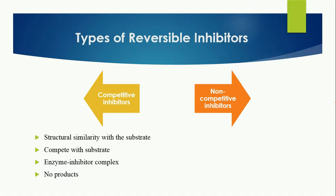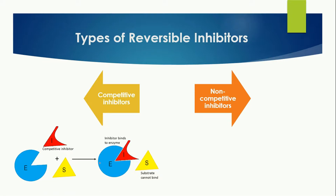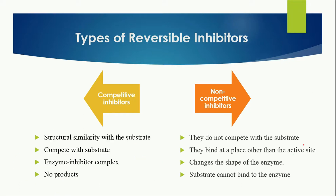The competitive inhibitors have structural similarity with the substrate, which means they compete with the substrate for the active site. After the competition, an enzyme-inhibitor complex forms, but since they are inhibitors, no product is formed. As you can see in the diagram, the enzyme and competitive inhibitor have similar shapes, so instead of the substrate, the inhibitor binds to the active site, preventing product formation while the substrate remains unprocessed.